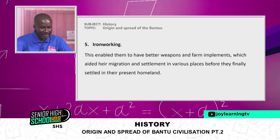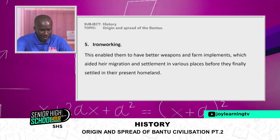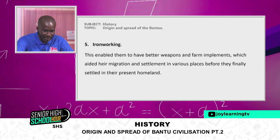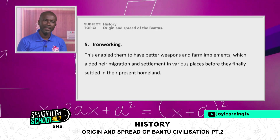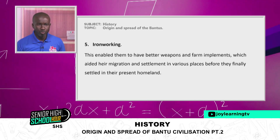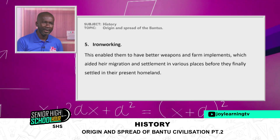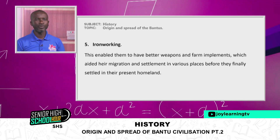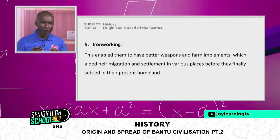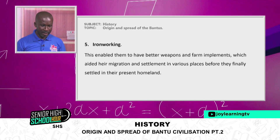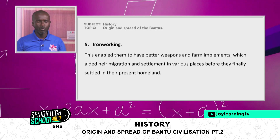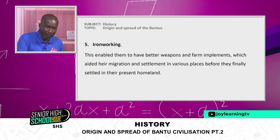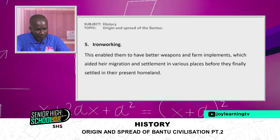Fifth, iron working. This enabled them to have better weapons and farm implements, which aided their migration and settlement in various places before they finally settled in their present homelands. Knowledge of iron working helped them produce tools to protect themselves, to farm, and also to adorn themselves — including bangles and earrings — while also serving as weapons and farm implements.